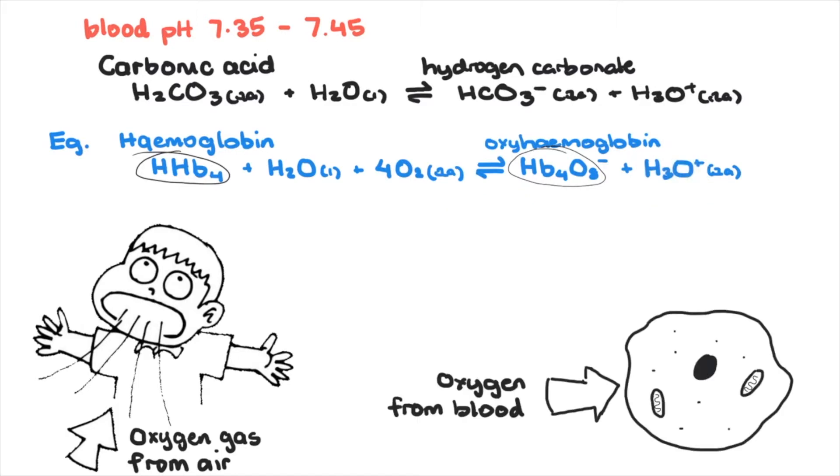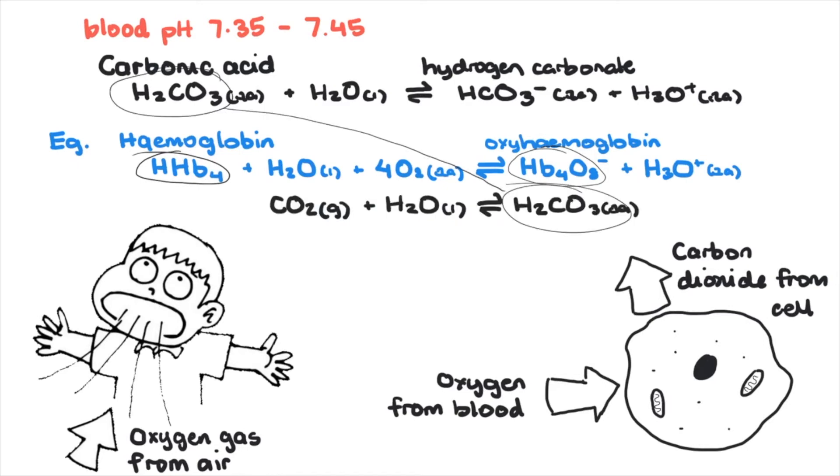As oxygen enters the cells from the blood, this drives the equilibrium in the left direction, reducing the concentration of hydronium ions. At the same time, carbon dioxide diffuses from the cells because of respiration and into the blood. This carbon dioxide reacts with the water and produces carbonic acid. And this carbonic acid increases the hydronium ion concentration, as the acidity in the blood increases. And that's all because you decided to breathe in.